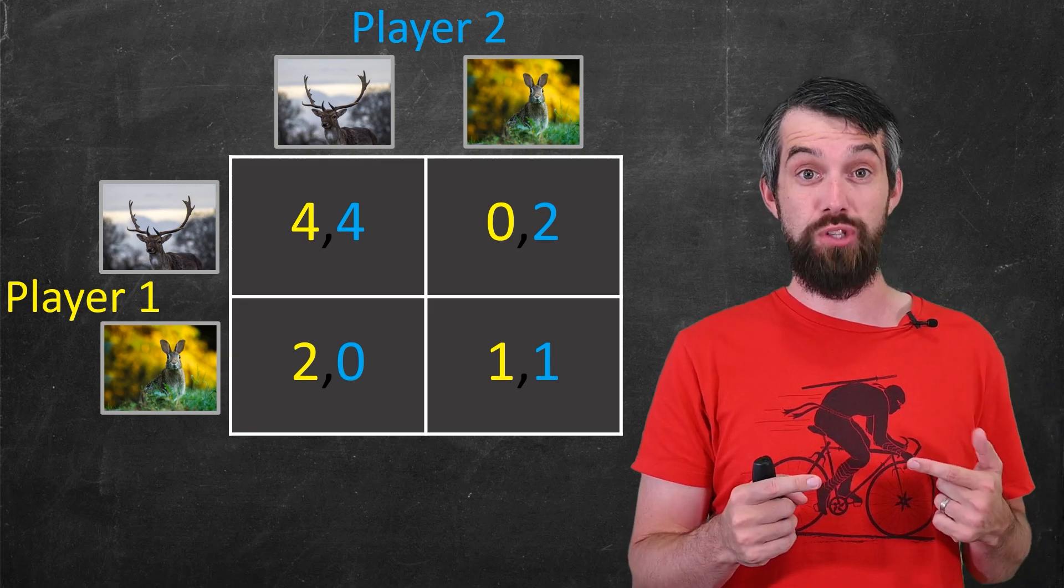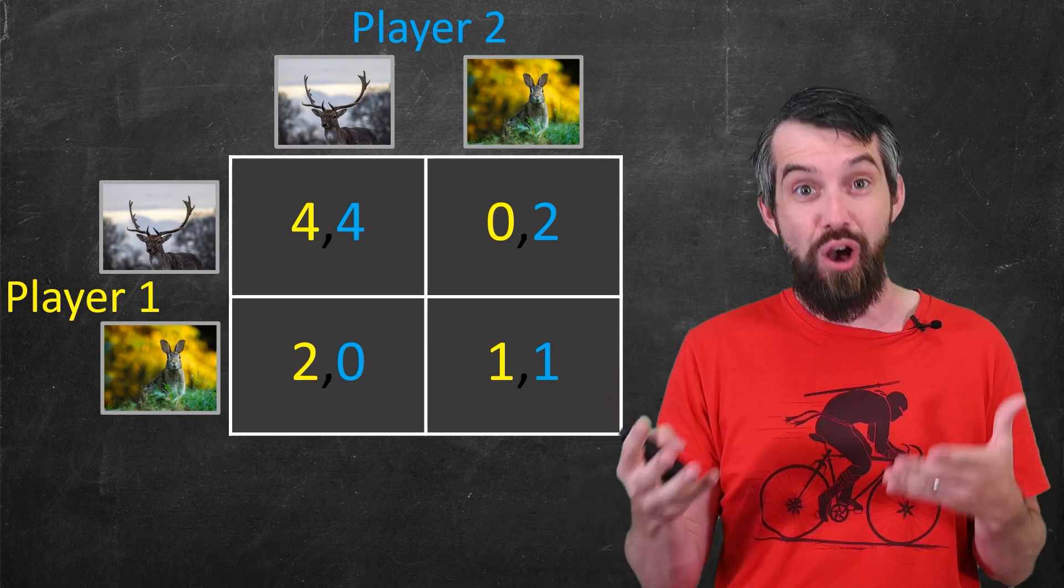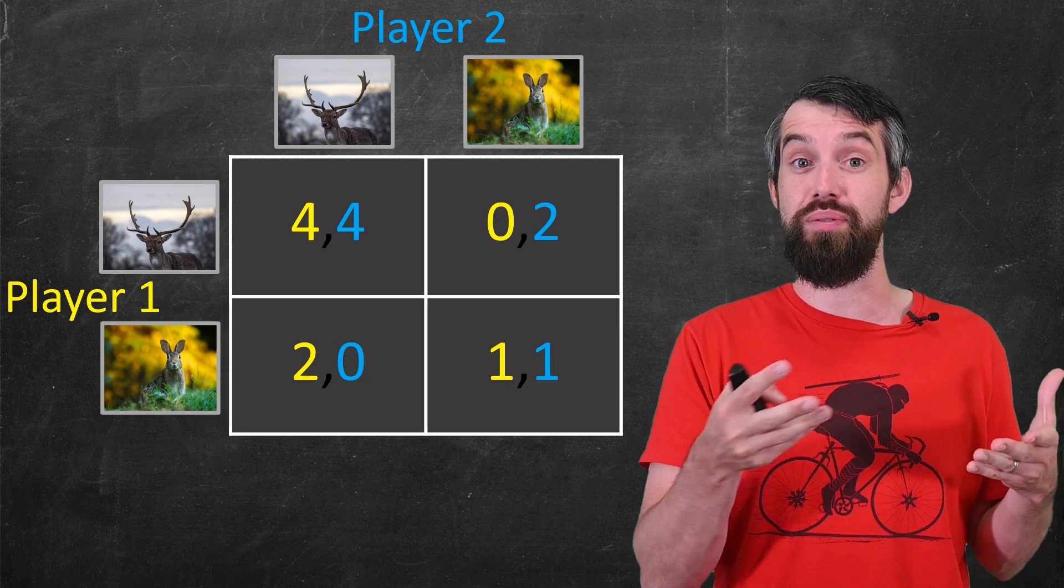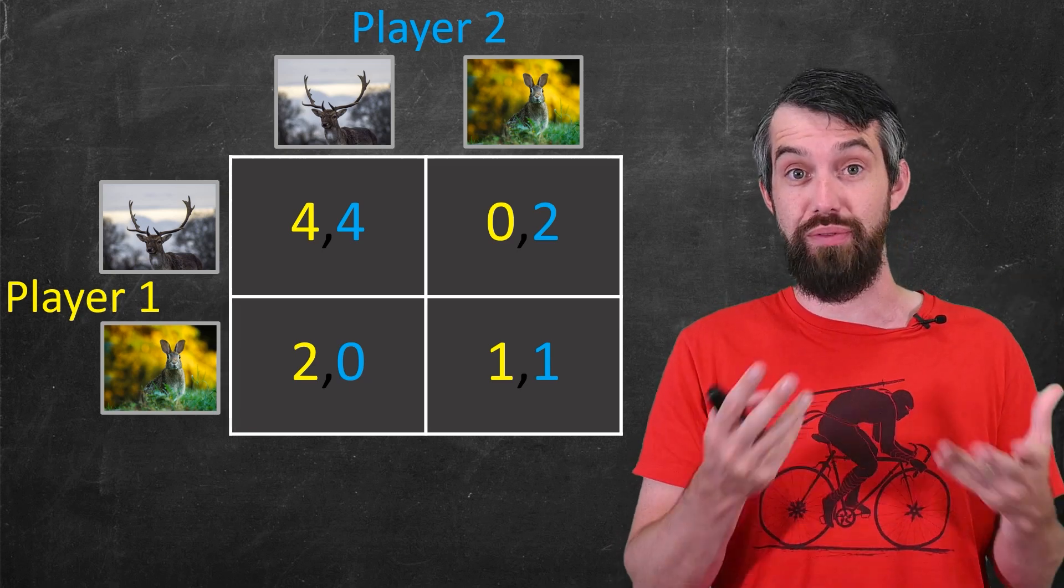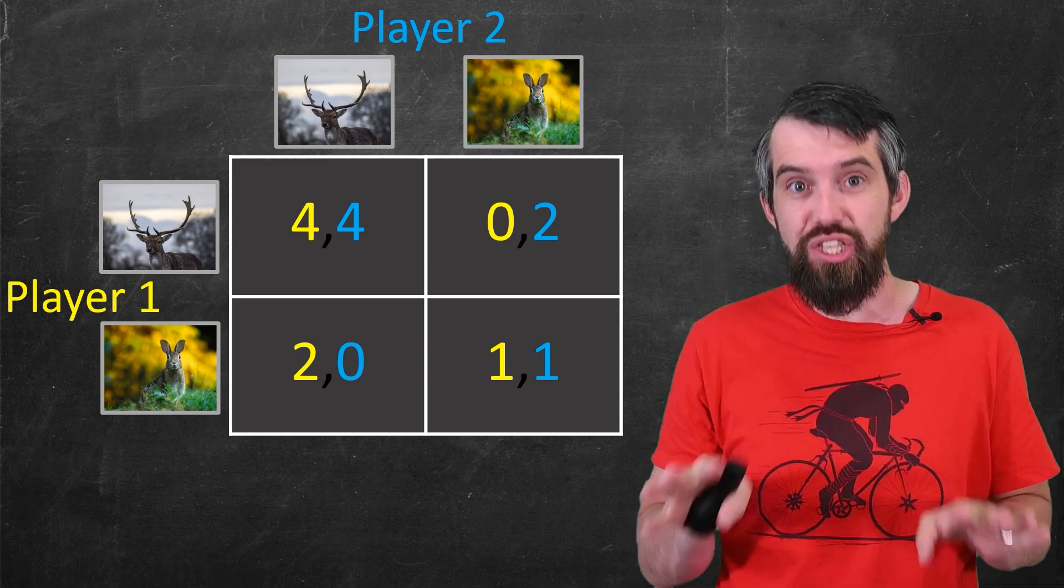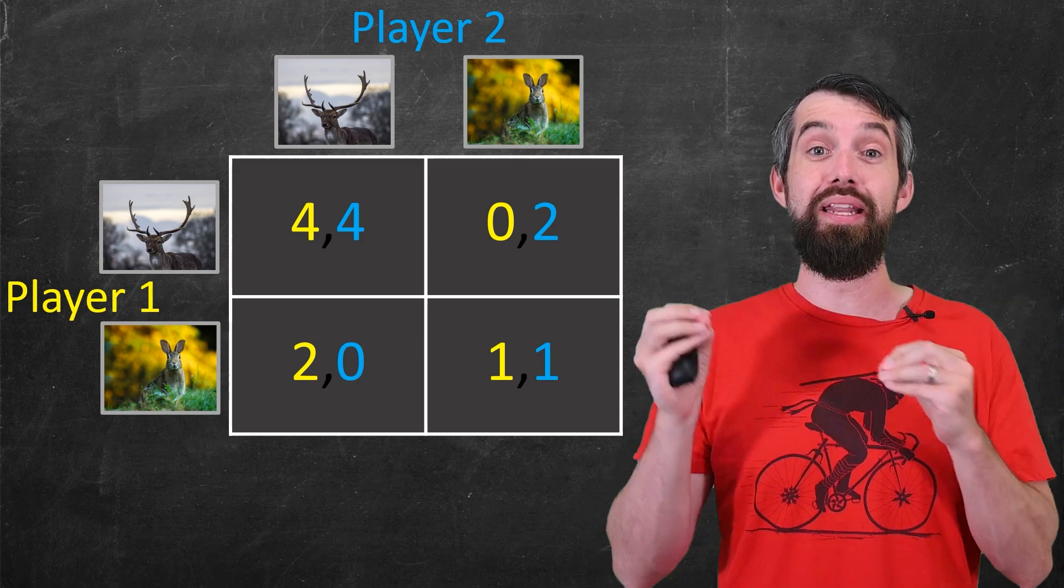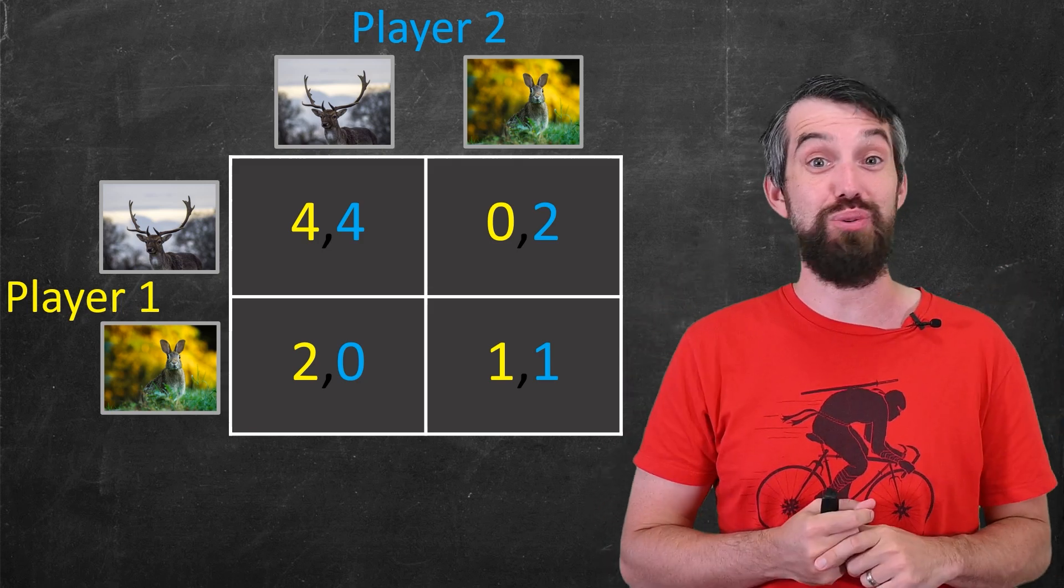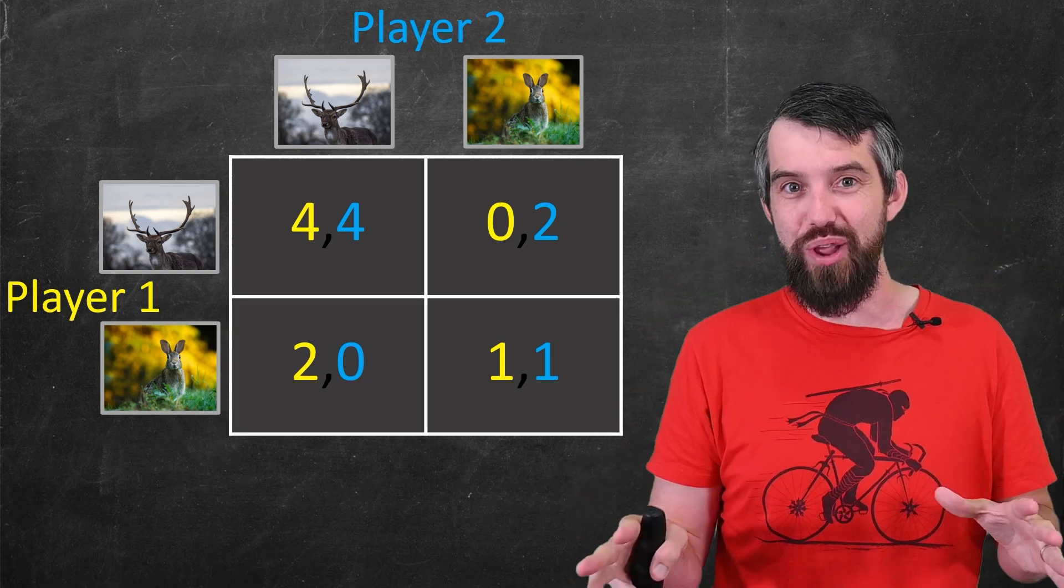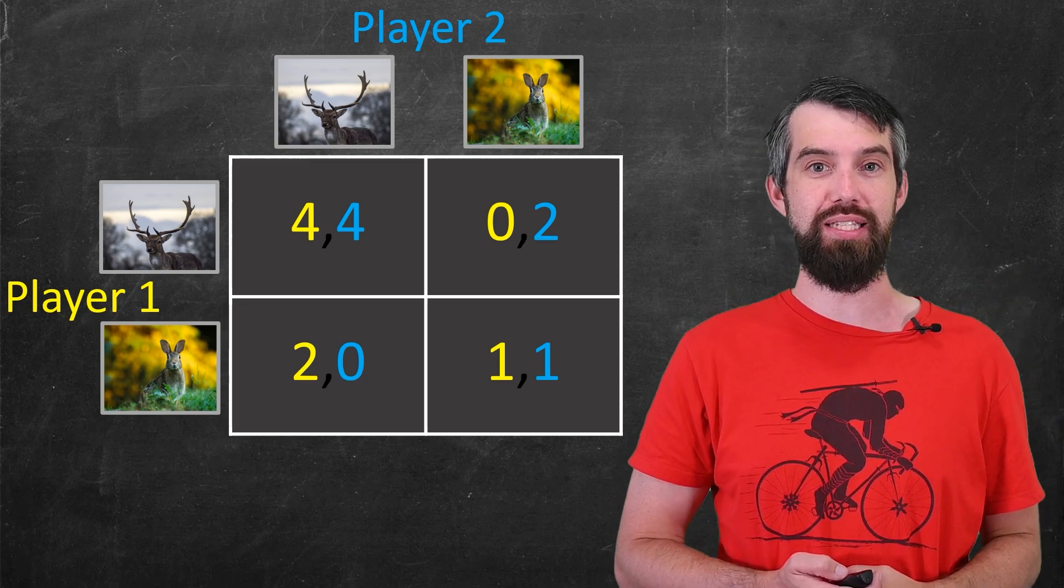Now, we've actually seen a bunch of so-called normal form games. Games that can be written down with a payoff matrix in this sort of format. We've seen a bunch of them previously in our series on game theory. And previously we had a type of analysis that actually doesn't work in this case. We talked about finding dominating strategies. A dominating strategy was a strategy that was always better than any other strategy. It didn't matter what your opponent played, you should always do the dominating one. But there are no dominating strategies in this case.